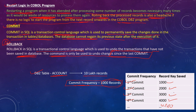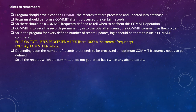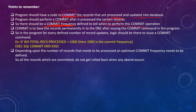Since we have saved data till the 4000th record, we need to restart the process from record 4001. The program should have code to commit records that are processed and updated into the database. The program should perform a commit after processing a certain number of records, so a commit frequency needs to be defined. COMMIT permanently saves the records into DB2 after the commit command is issued in the program.